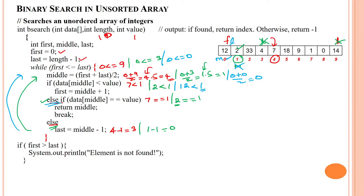Checking: 12 less than searching value 1 is false. Else-if: data of middle 12 equal to searching value 1 is also false. Else statement executes: last index is 0, middle index is 0, so last index is updated with 0 minus 1, which becomes minus 1. Last index is now updated to minus 1.